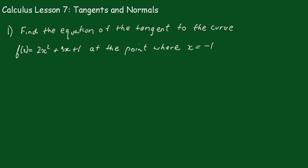Question 1, we have to find the equation of the tangent to the curve f(x) = 2x² + 3x + 1 at the point where x equals negative 1. First of all, find out what the function value is, so at x equals negative 1, f(-1) equals 2 times (-1)² plus 3 times (-1) plus 1 and that comes out to 2 minus 3 plus 1 which gives 0.